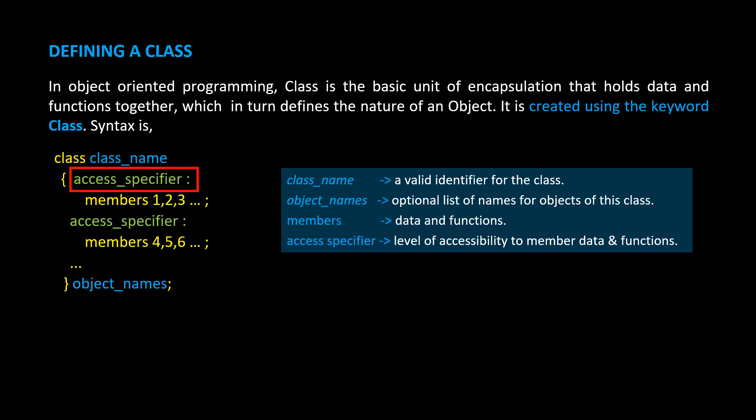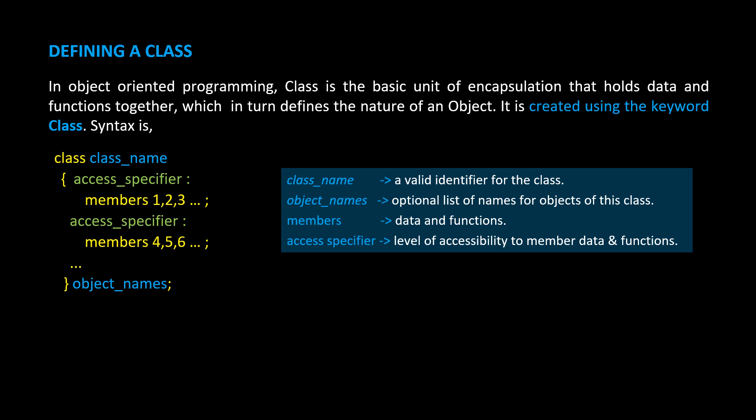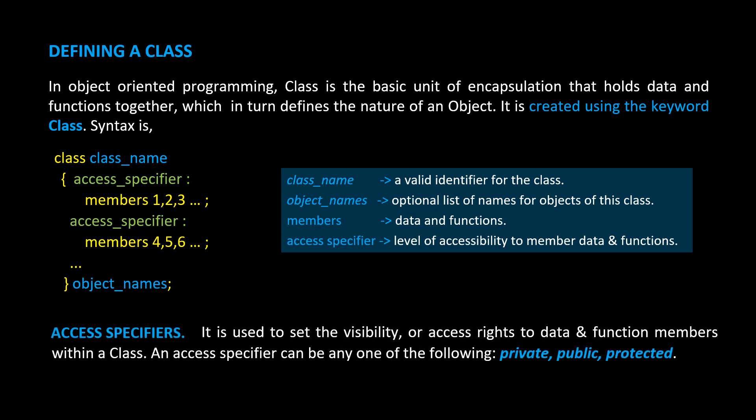An access specifier is the level of accessibility provided to member data and functions. It declares the category of security level provided to data and functions. It is used to set the visibility or access rights to data and function members within a class. An access specifier can be any one of the following: private, public, or protected.